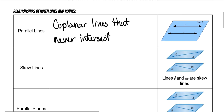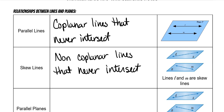Skew lines are non-coplanar lines that never intersect. Those lines are not going to be on the same plane. This is an example of skew lines — they are two lines on separate planes. They still won't ever touch, but they're not parallel because they're not running in the same direction. They're on separate planes, so that's what makes them skew lines.